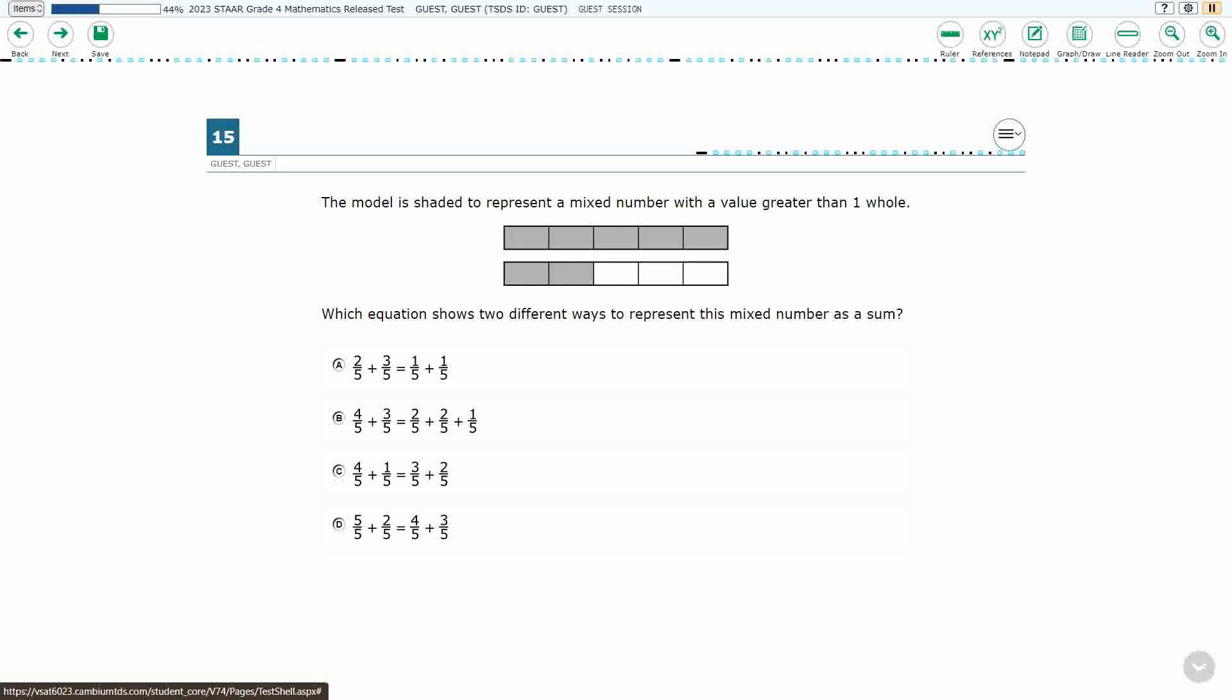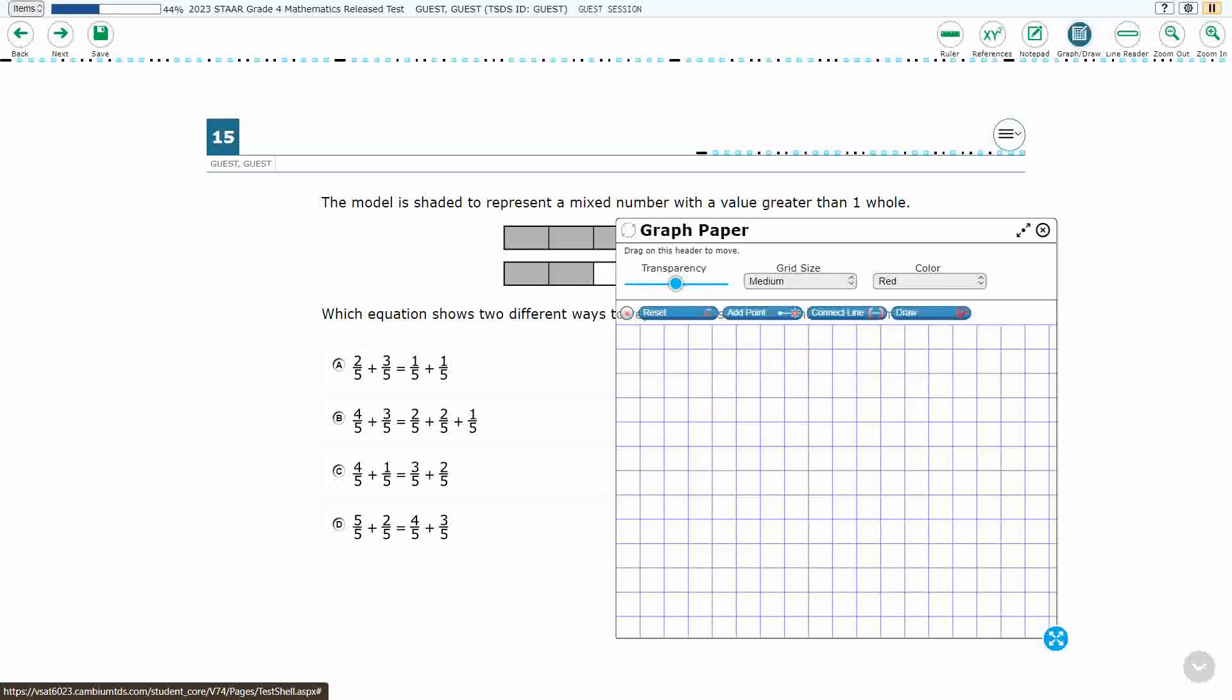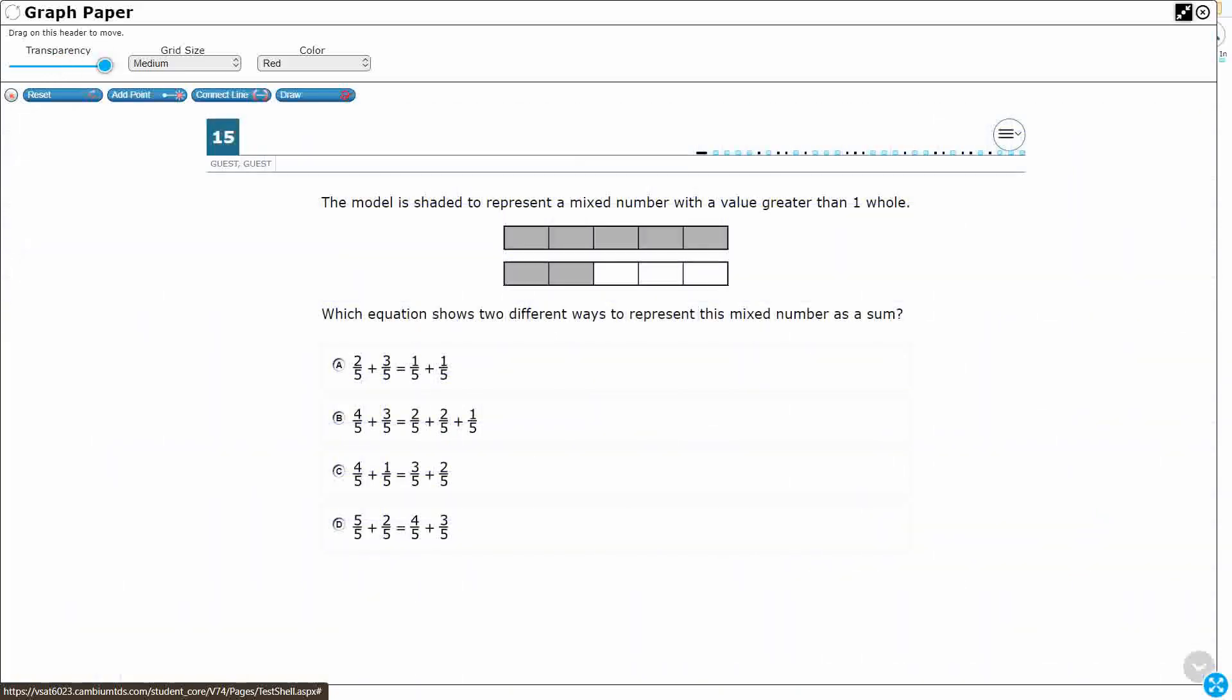Alright, so we've got a model here and it says that it is shaded to represent a mixed number, so that's going to be important for us to keep in mind, with a value greater than one whole. So we need an equation that shows two different ways to represent this mixed number as a sum. So first, what does this represent?